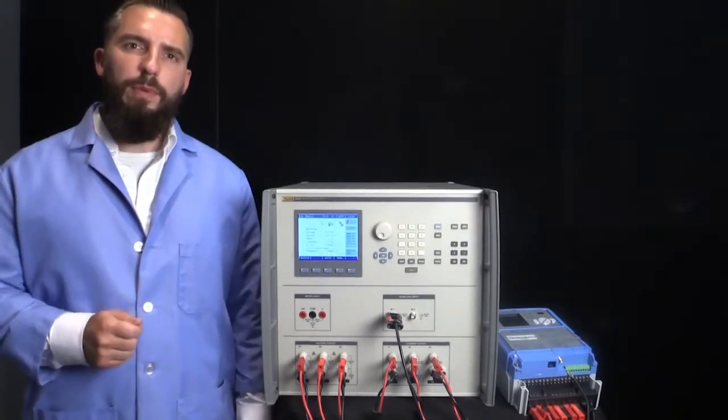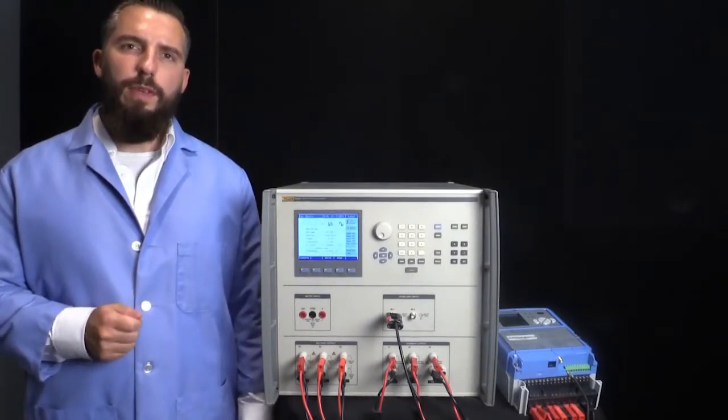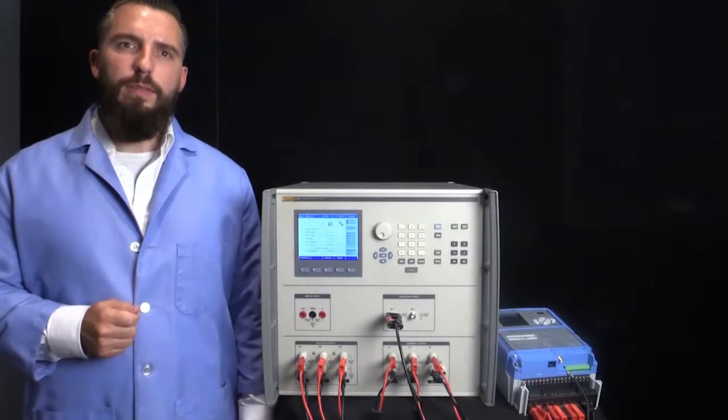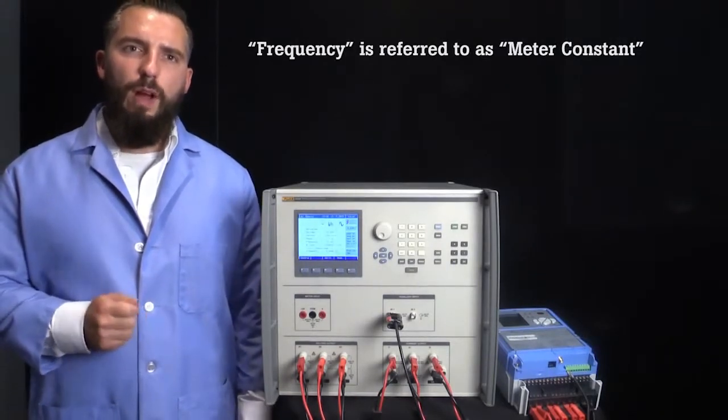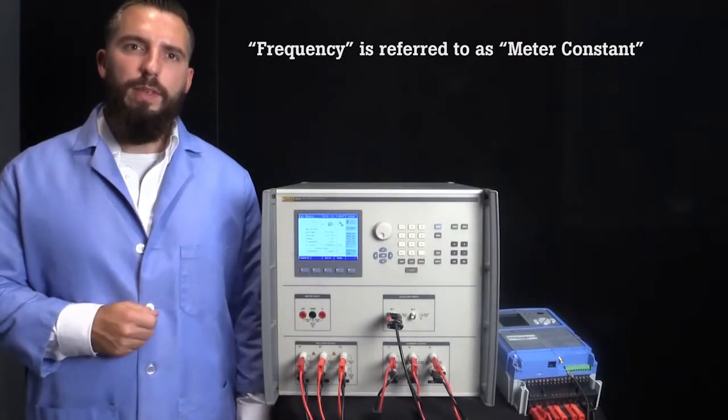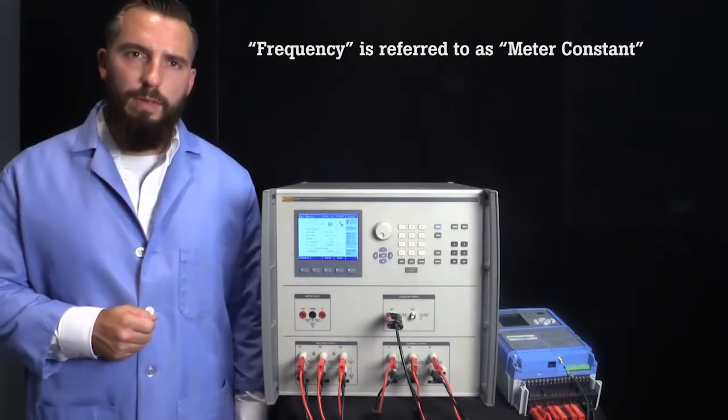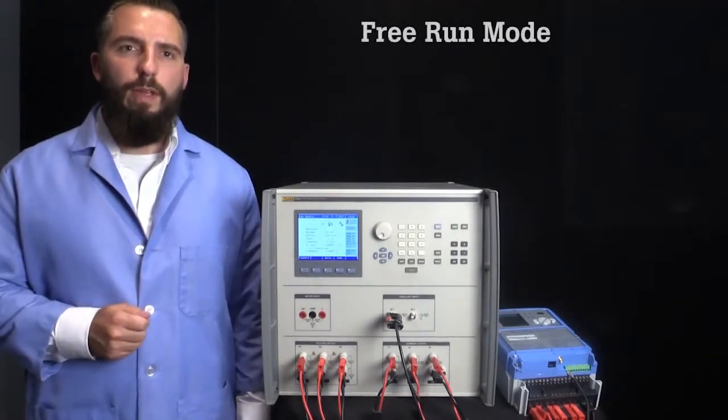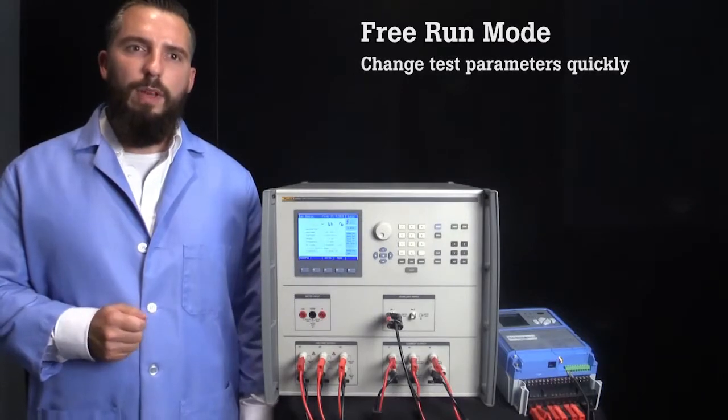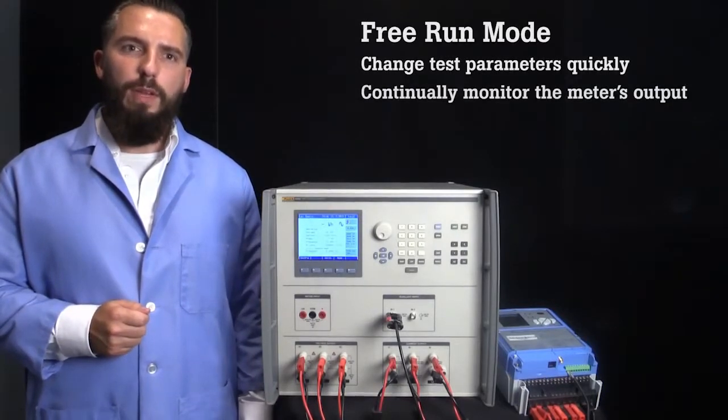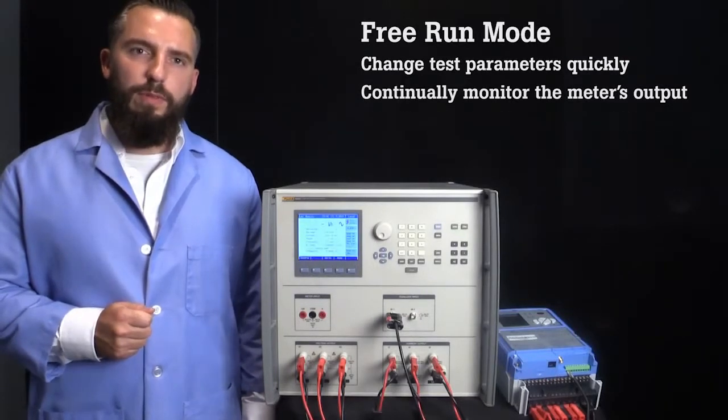One of the biggest pain points in energy meter calibration is determining what the correct frequency of the meter output is, based on the energy it is measuring. For reference, the frequency is also commonly referred to as the meter constant and matching the meter constant to the calibration system can be confusing. The 6003A has a mode called Free Run that simplifies this process and allows you to quickly change the test parameters by continually monitoring the meter's output to verify that the correct meter constant is being used.